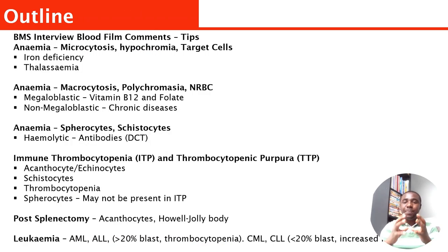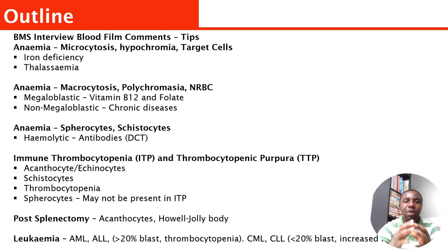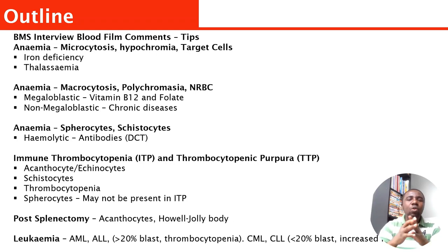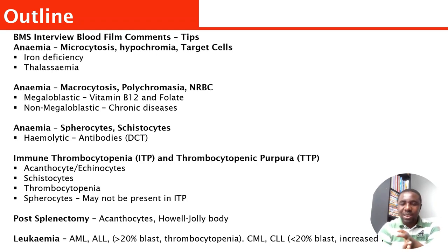Let me give you tips. Everything I'm going to share on this video, I'll summarize here. When you go for your interview and they present you a blood film, it cannot be more than any of this. Number one, they are likely to present you a blood film on anemia. When it comes to anemia, you have microcytic anemia, normocytic anemia, and macrocytic anemia.